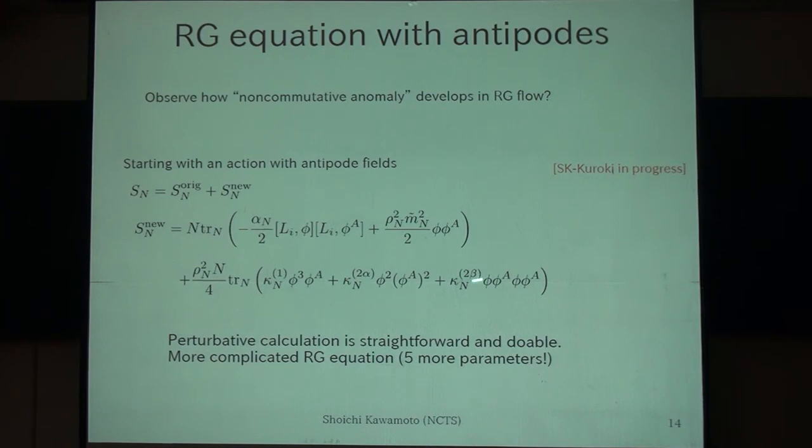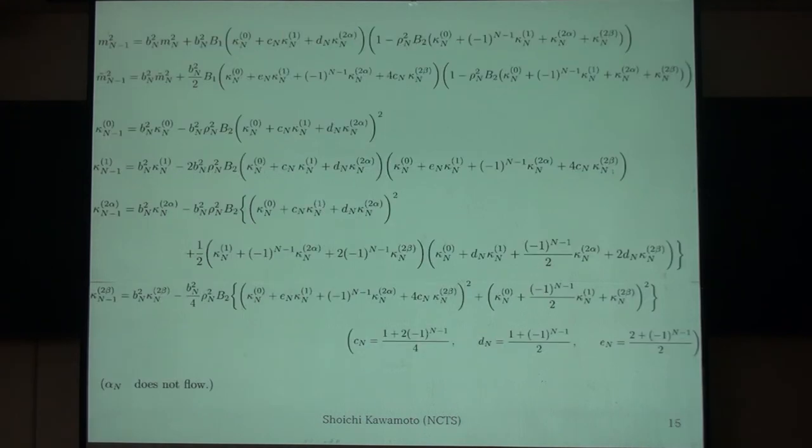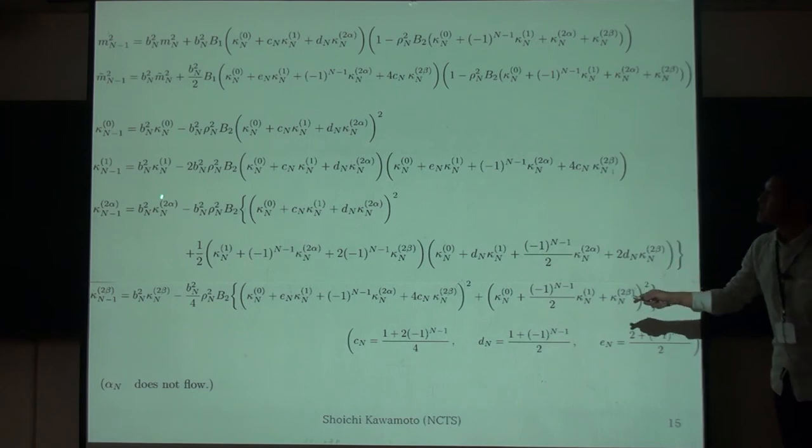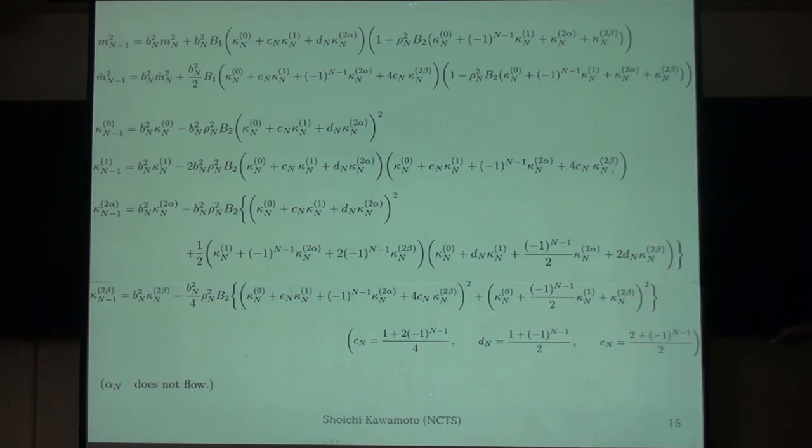So, once introducing this full action, then this is straightforward. For example, you can calculate the equation from the N theory to the N-1 variables. And here, there are many coefficients, C_N, or T, or something. This one has some oscillating factor inside it. Because of the oscillating factor, we may first search what is the fixed point for the even N case and then the odd N case.